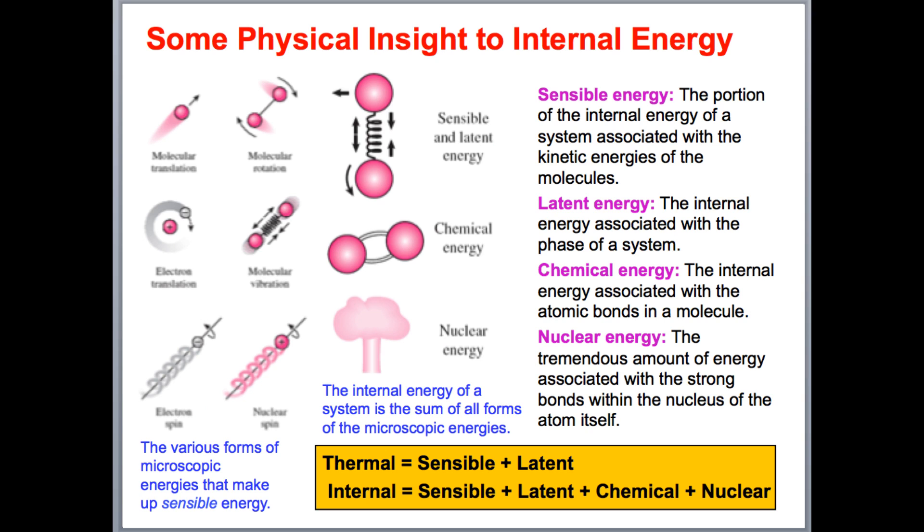So how are we going to describe this variable U? Well, U is a sum of all of these different types of energies, sensible, latent, chemical, and nuclear. Now, sensible energy basically has to do with the kinetic energy of the molecule. And by kinetic, I'm talking about the movement of the particle, basically. And that takes into account translation of the particle, rotation, and vibration. We also have the chemical energy, the bonds between the molecule itself. There's a lot of energy associated with those. And it also takes into account nuclear energy, which is the bonds within the atom nucleus itself.